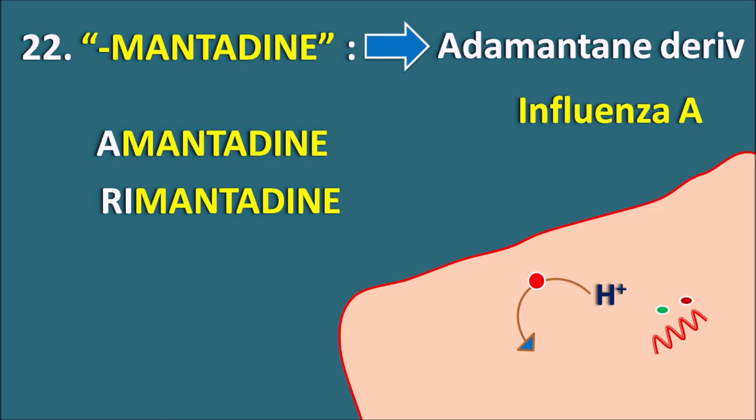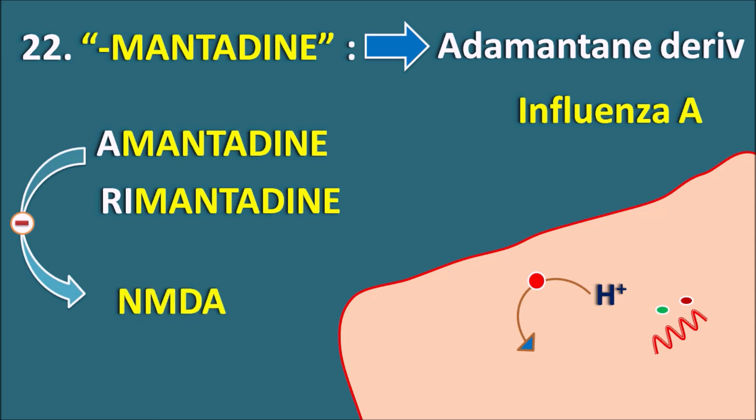These drugs are not useful in influenza B, which does not express M2 ion channels. Apart from this, Amantadine can act by other mechanisms: it can block NMDA receptors, block muscarinic acetylcholine receptors, and increase dopamine release. By all these mechanisms, Amantadine can be used in the treatment of Parkinson's disease.